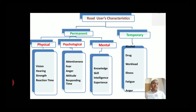Now let's talk about psychological characteristics: attentiveness, fear, anger, attitude, and responding time. Fear means at the time of driving, you should not get scared by whatever situation happens. You should also not get angry. For example, if a vehicle overtakes you at high speed, you may get scared or angry — that is exactly what psychological characteristics like fear and anger mean. Mental characteristics include knowledge of the road user, skill, intelligence, and experience.